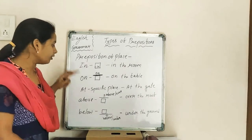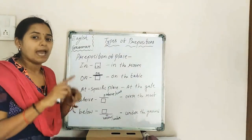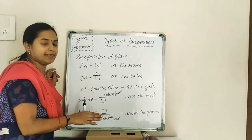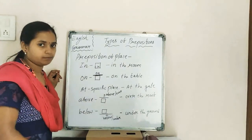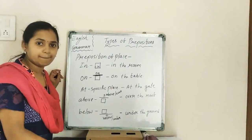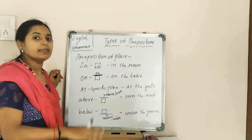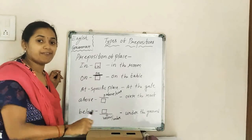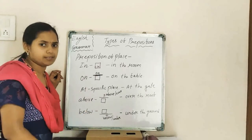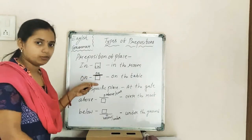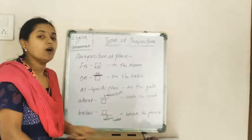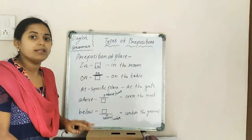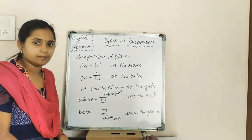Moving to the next place preposition: 'on.' On means above the surface. If anything is resting above a surface, we say 'on' — for example, the book is on the table, the duster is on the ground. If any person or thing is above a surface, we use 'on.'